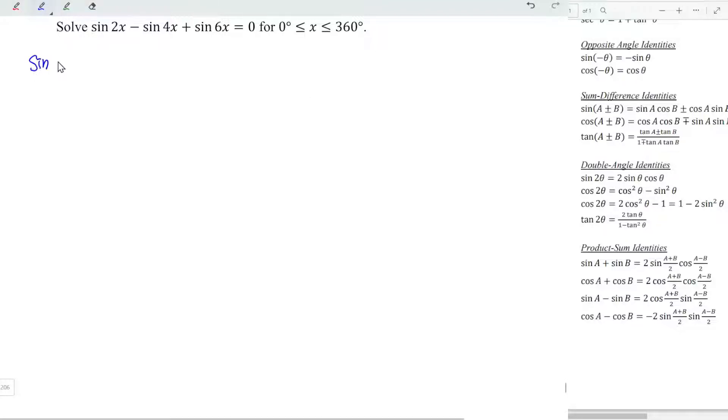Firstly, bring the term with the highest angle to the first place, followed by the term with the smallest angle, which is sine 2x. Follow exactly the plus minus sign and followed by the rest of the terms minus sine 4x. This is equal to the right hand side, which is zero.